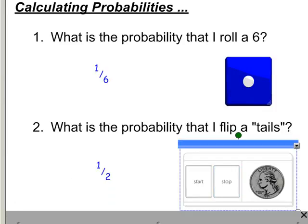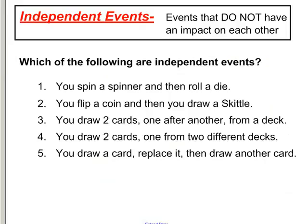In this lesson, we need to focus on probabilities and independent events. Independent events are events that don't have an impact on each other — two separate events that really do not influence each other. Let's talk about which of the following are independent, which ones do not affect each other.